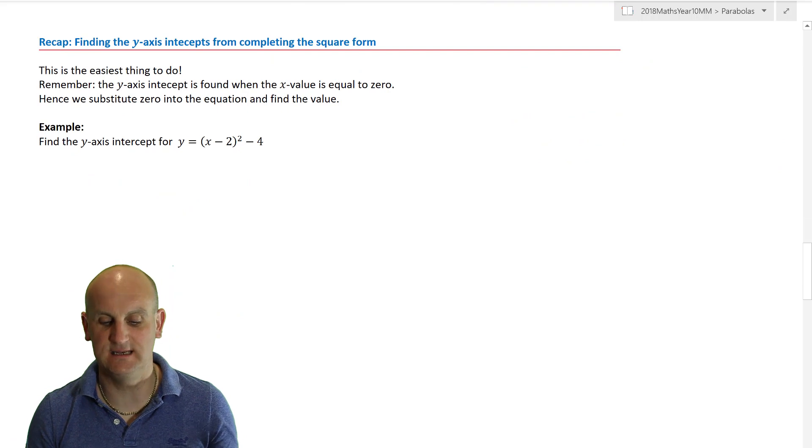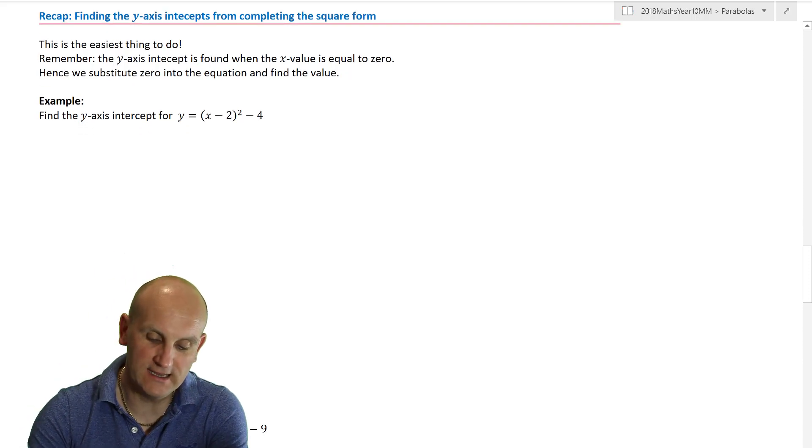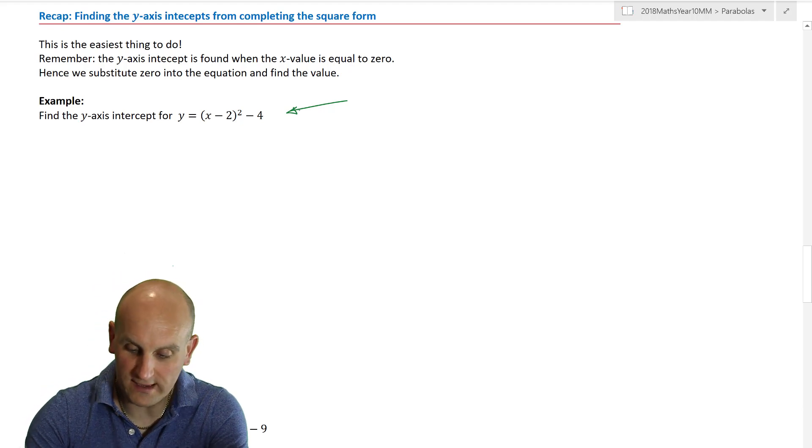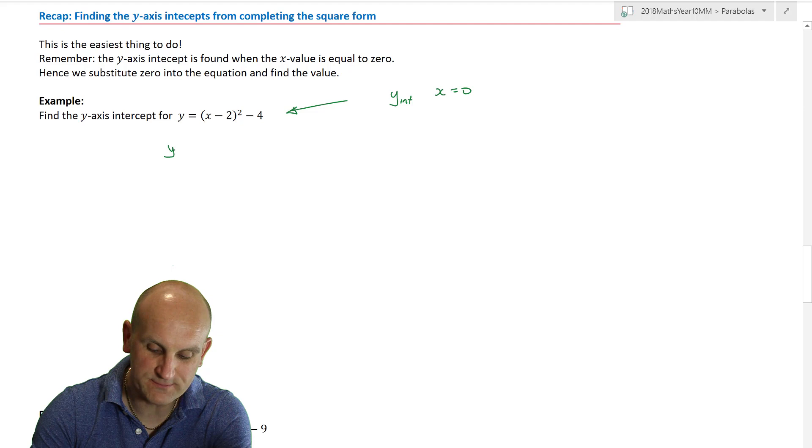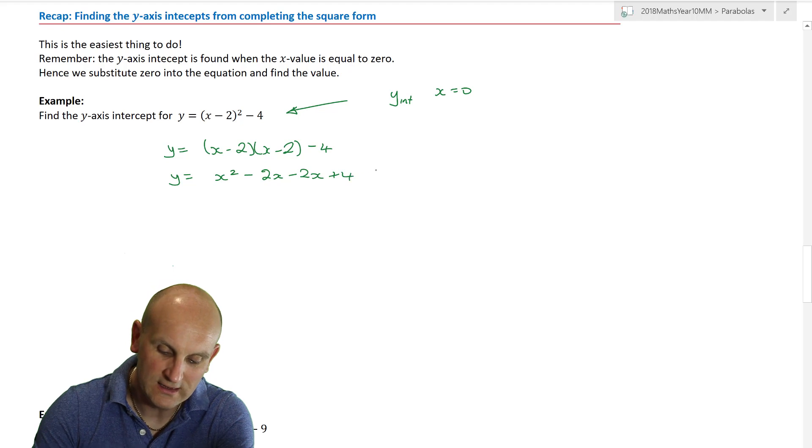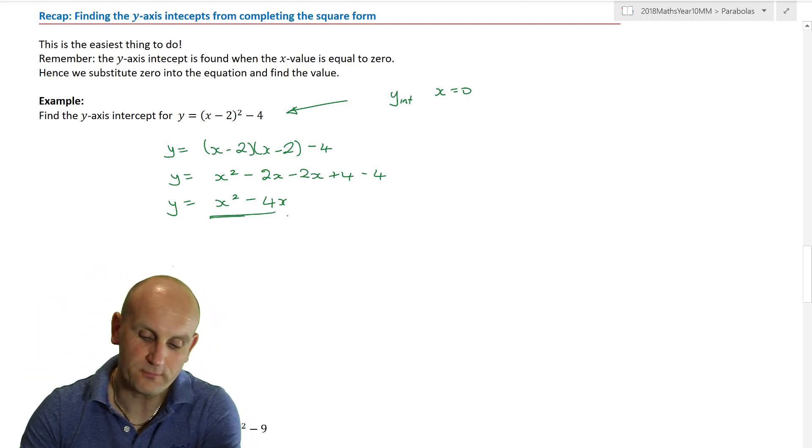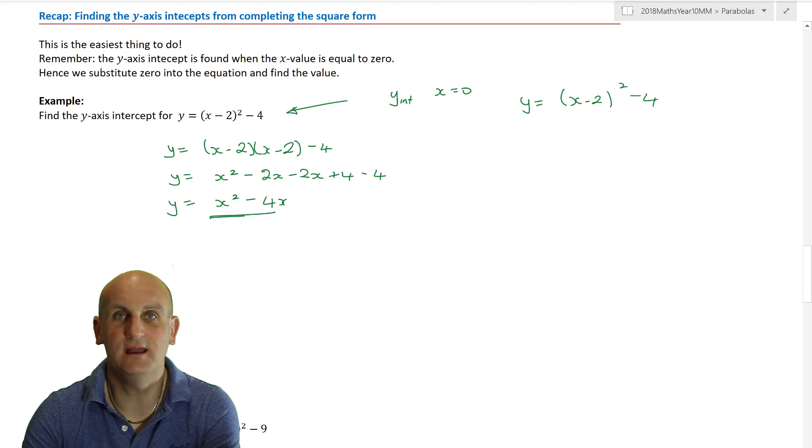How do we find the y-axis intercept from a completed the square form? Well, that's interesting. I've already done examples of completing the square, but in my previous video, how did we find the y-axis intercept? If you remember, to find the y-axis intercept, all I need to do is let x equals 0. Now, it surprises me the number of people who will multiply up these brackets. I'll go x minus 2 times x minus 2 minus 4. So, y is equal to x squared minus 2x minus 2x plus 4 minus 4. Now, y is equal to x squared minus 4x. Well, they cancel, and so, oh, I'm really confused.